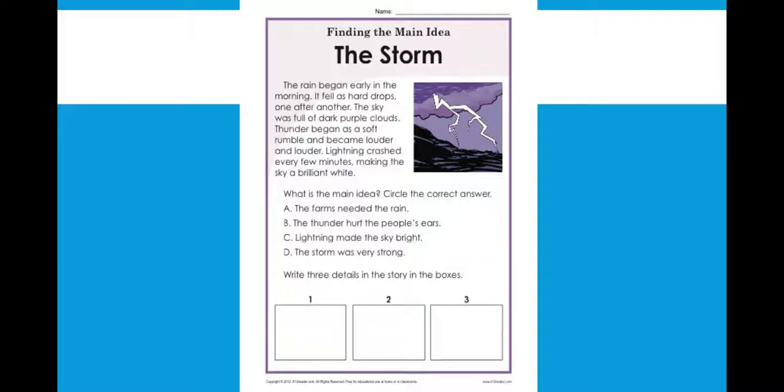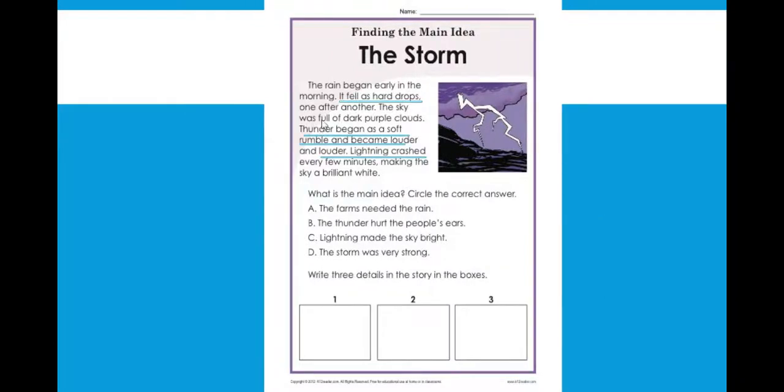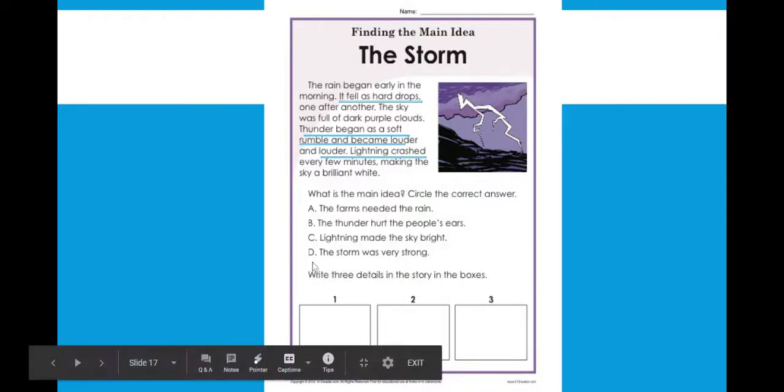So now, because at the beginning I said we would have to use our key details to support the main idea. How do we know that the storm was very strong? What happened that tells us that it was a strong storm? Let's see if we can find some key details that tell us that the storm was very strong. We know the rain fell as hard drops. The thunder began as a soft rumble but became louder and louder. So knowing that the thunder was loud tells us that the storm is strong. And that lightning crashed every few minutes, making the sky a brilliant white also tells us that the storm was very strong. So my main idea was D. And these that I have underlined here are my three details that tell me how I know that the storm was very strong.